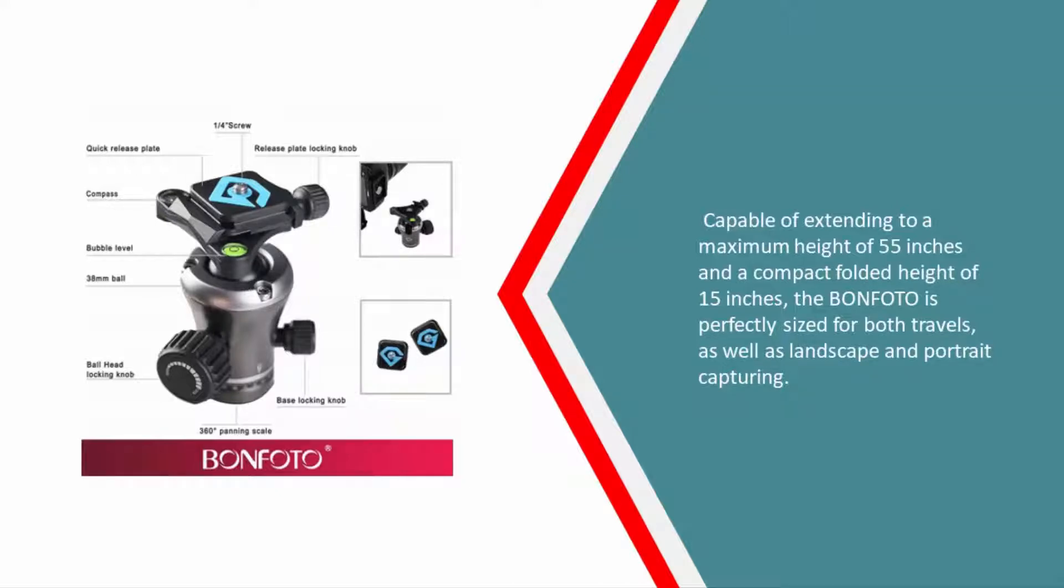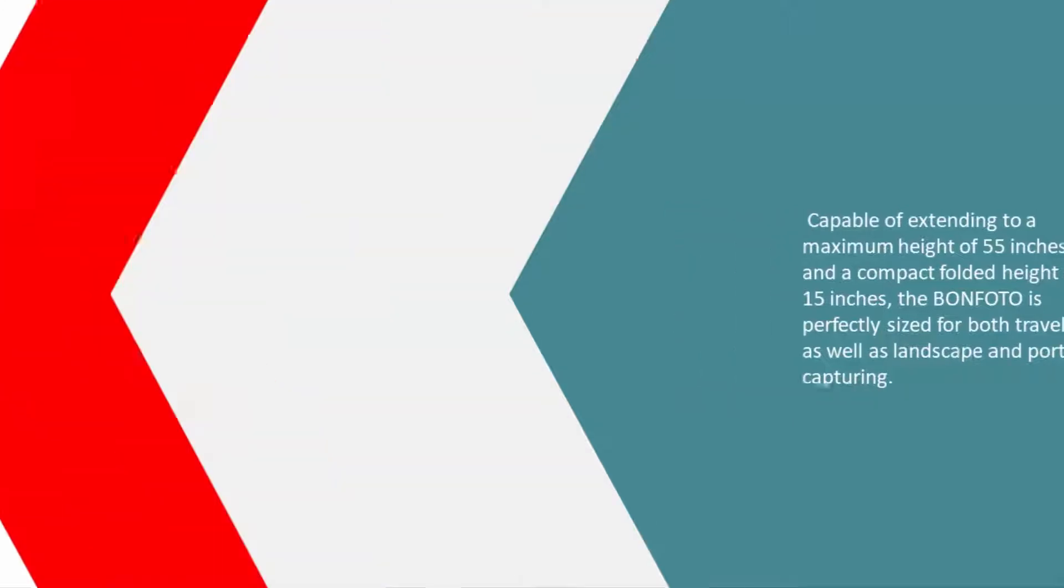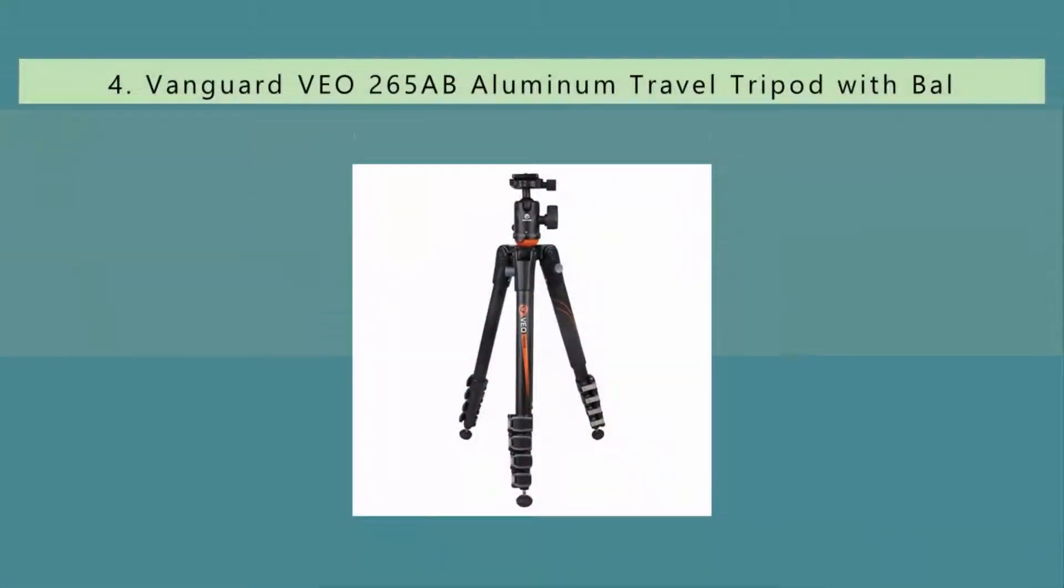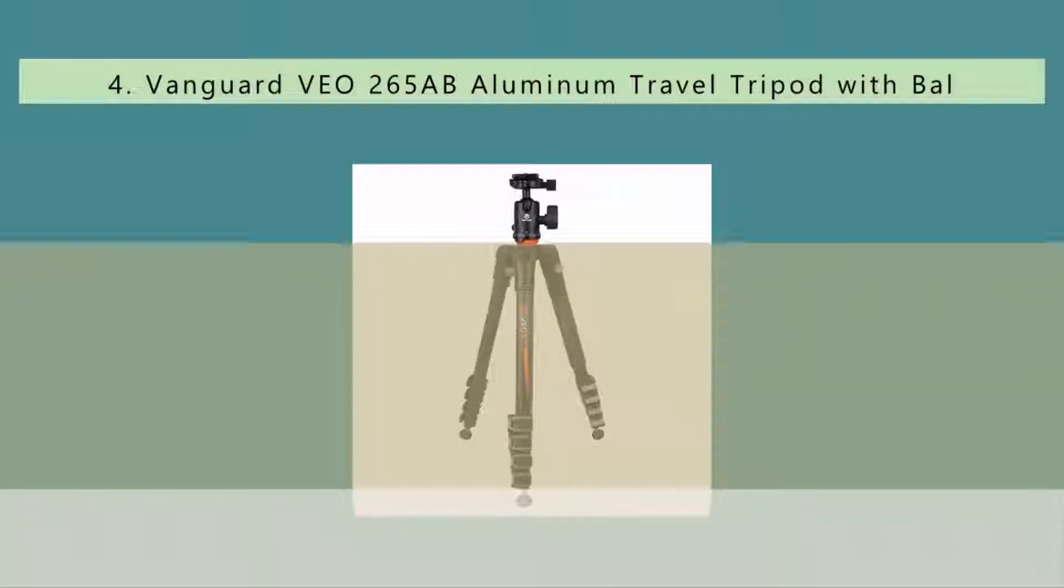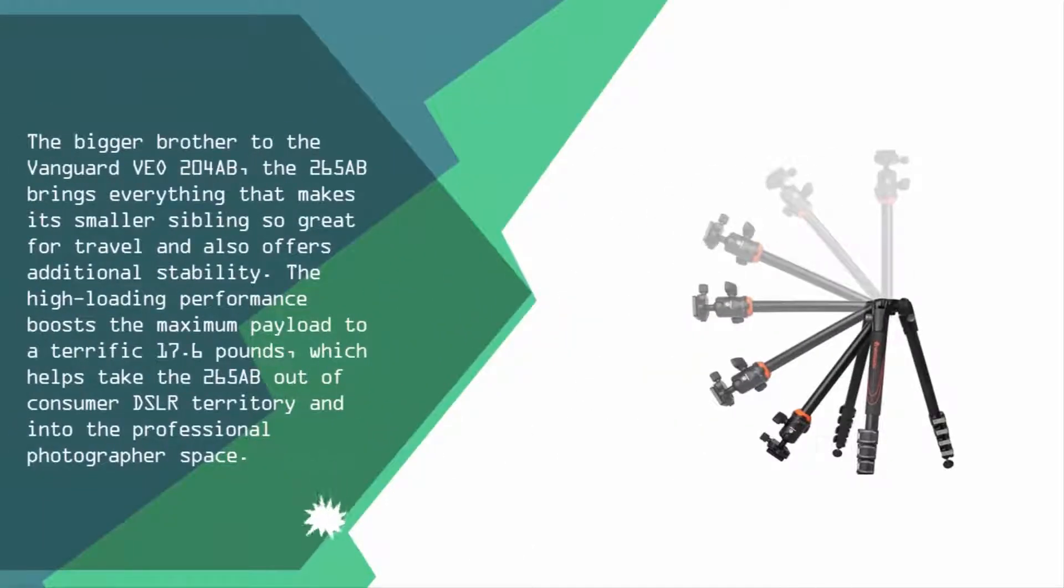At number four, the bigger brother to the Vanguard VEO 204AB, the 265AB brings everything that makes its smaller sibling so great for travel and also offers additional stability. The high loading performance boosts the maximum payload to a terrific 17.6 pounds.